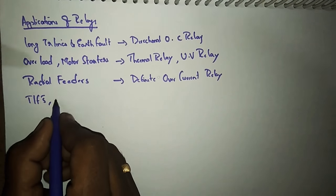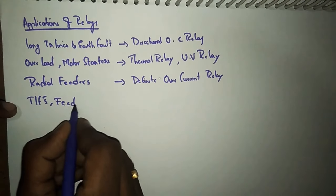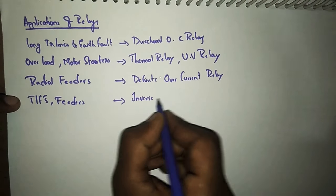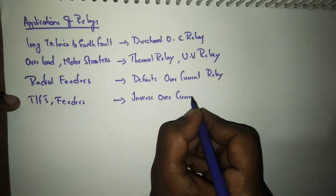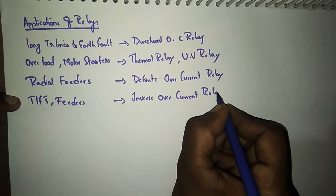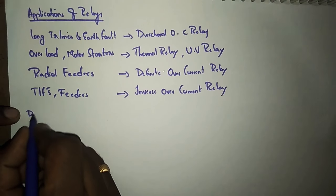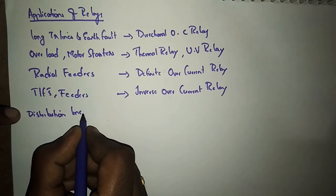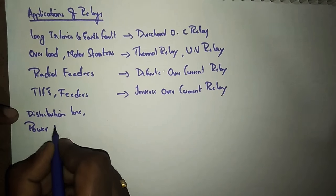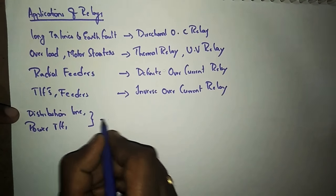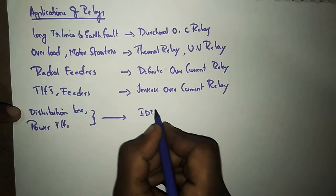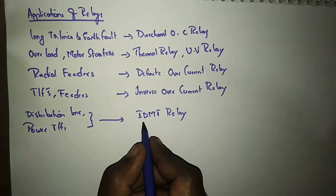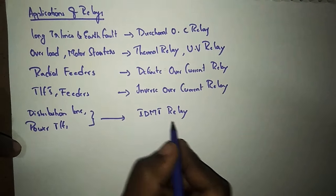For transformers and remaining existing feeders — except radial feeders — we go for an inverse time current relay. For distribution lines and for power transformers, we provide an inverse definite minimum time relay, which has the characteristics of both inverse current and definite minimum time relays.